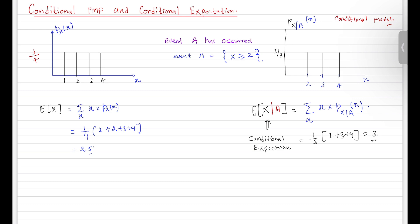Coming back to the ordinary PMF, what is the variance of X? From the previous video, for a uniform random variable we can use the formula (1/12)(b − a)(b − a + 2). Here that gives (1/12)(4 − 1)(4 − 1 + 2) = (1/12)(3)(5), which equals 15/12 — wait, using the appropriate formula the result is 5/4, which equals 1.25. The lecturer notes 7.5 here but also flags a correction later.